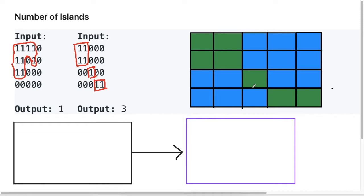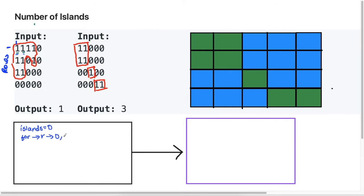When we see a problem like this we know we need to traverse through each of the cells to figure out where the ones are. The first thing I'm going to do is have a variable called islands — we'll initialize this to zero — and then we'll iterate over all the rows and columns to visit each and every cell using a nested for loop. In the outer for loop we have the row index going from zero up to the length of the grid.